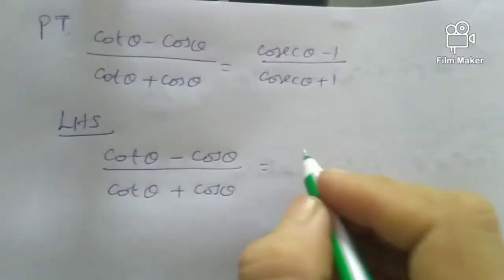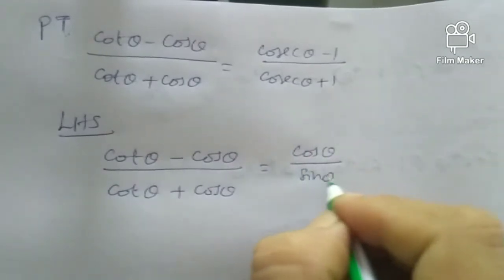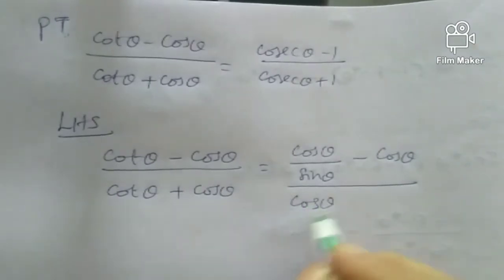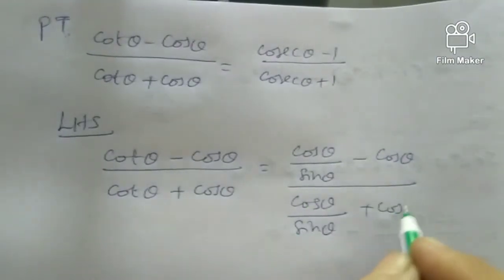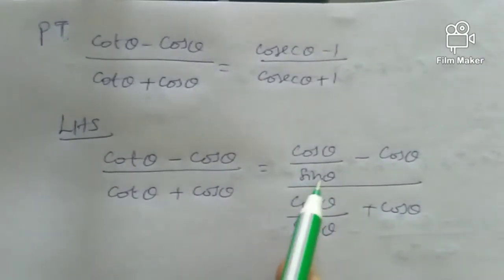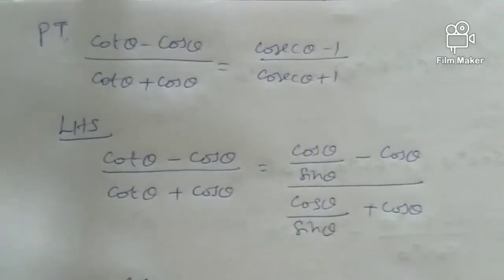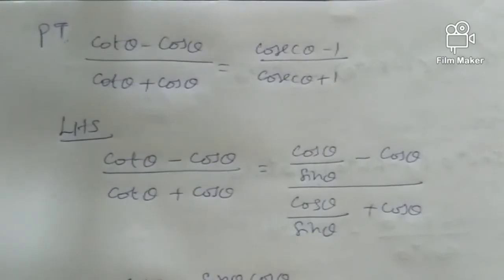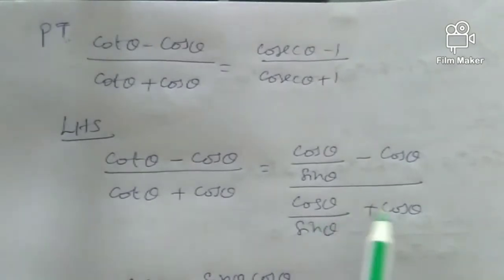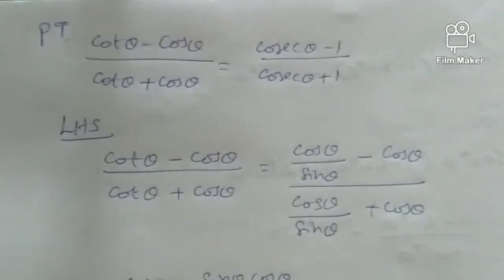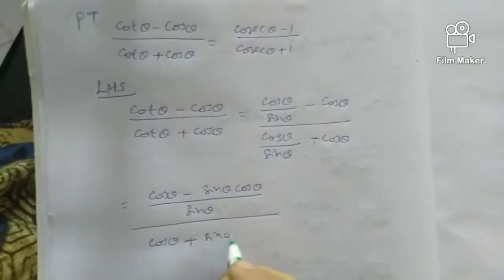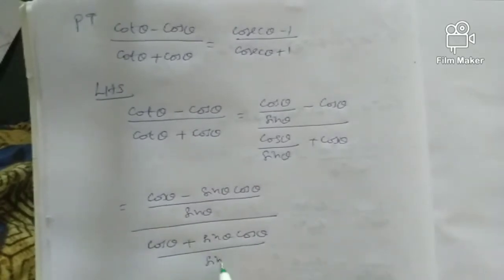Cot theta is cos theta by sin theta, so we write cos theta by sin theta minus cos theta in the numerator, and cos theta by sin theta plus cos theta in the denominator. We take LCM for both numerator and denominator, giving cos theta minus sin theta cos theta by sin theta over cos theta plus sin theta cos theta by sin theta.